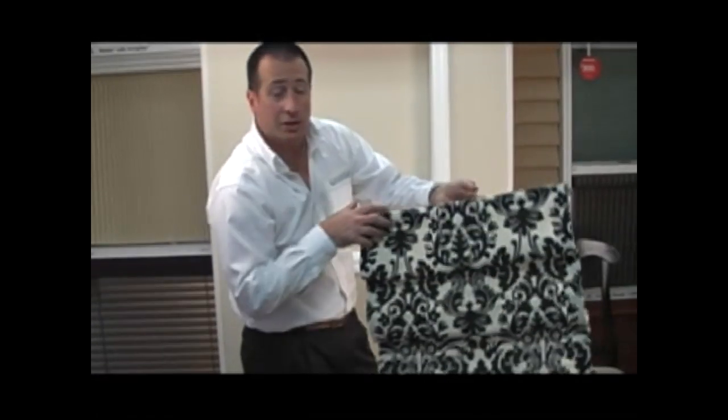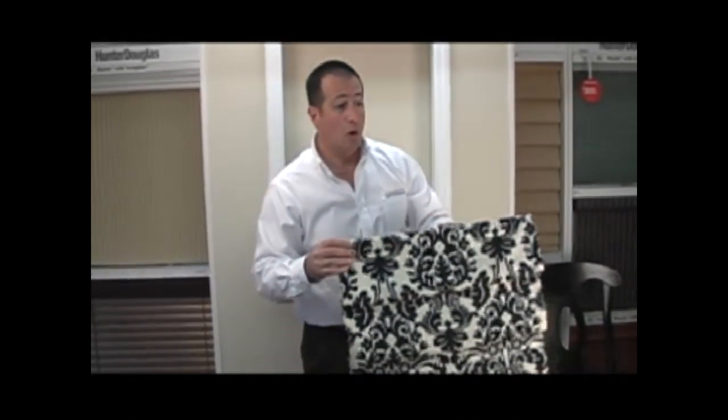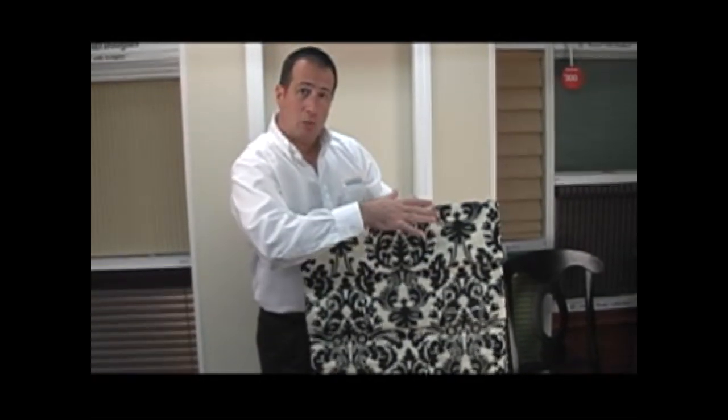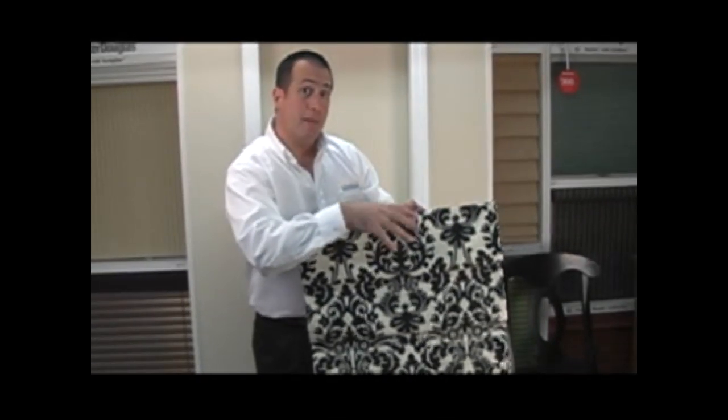Now we do offer other options on our Roman Shades. We offer a cord forward option which means if you prefer the cord to be around front we can offer that to you. However that shade will have a little valance to cover the mechanisms.